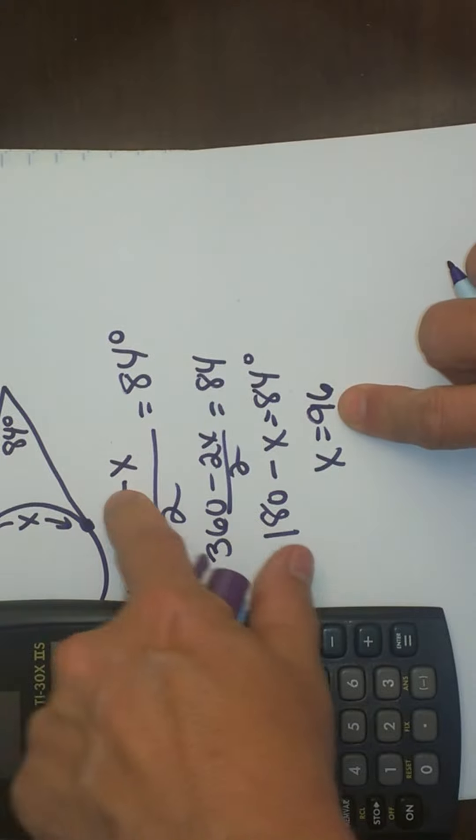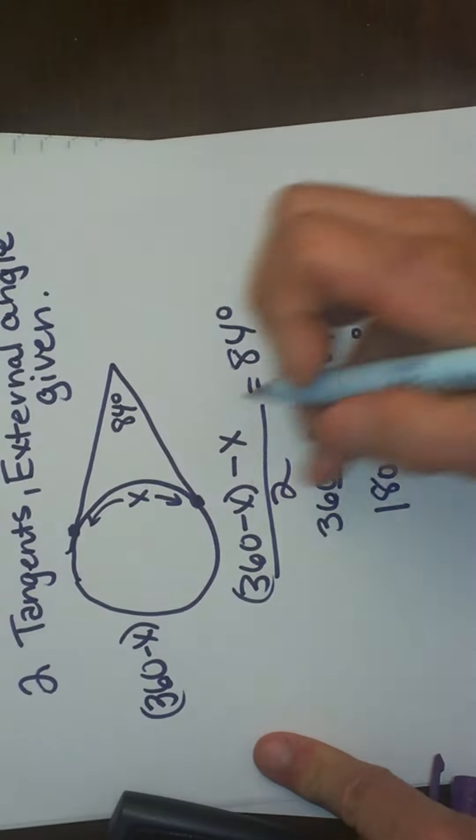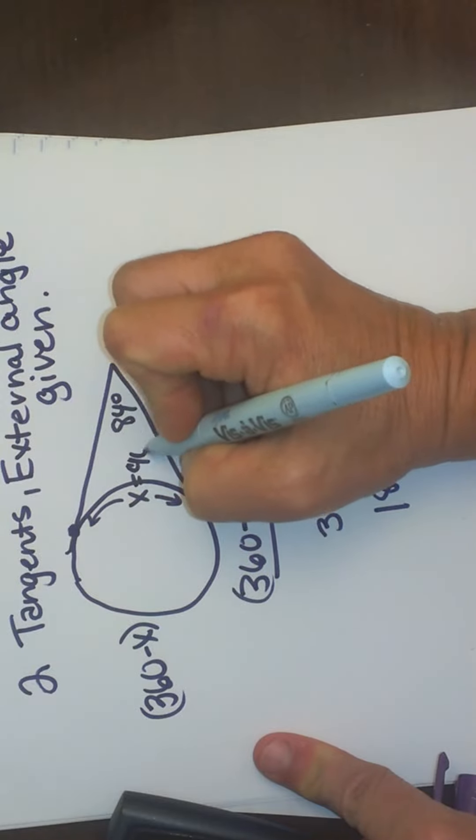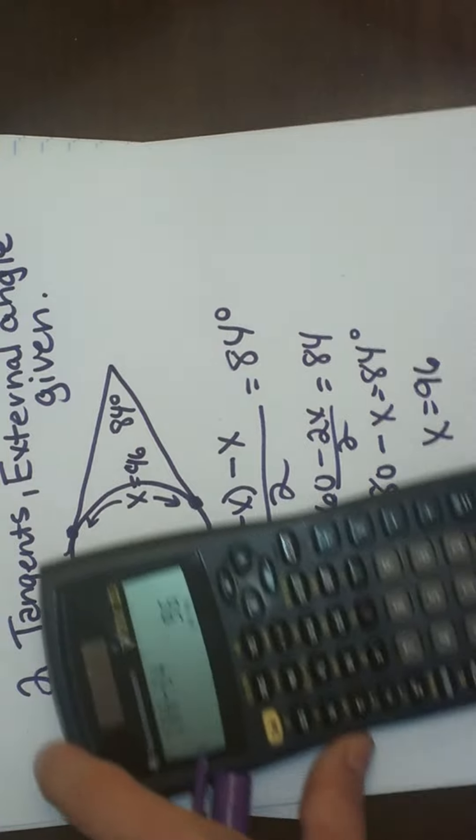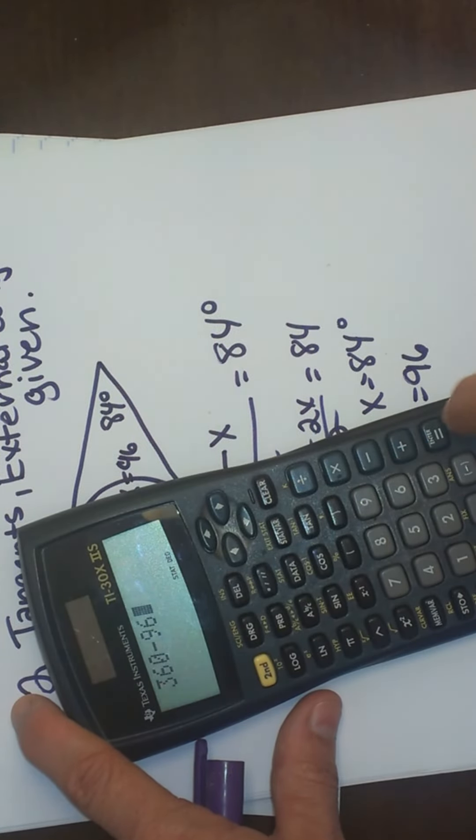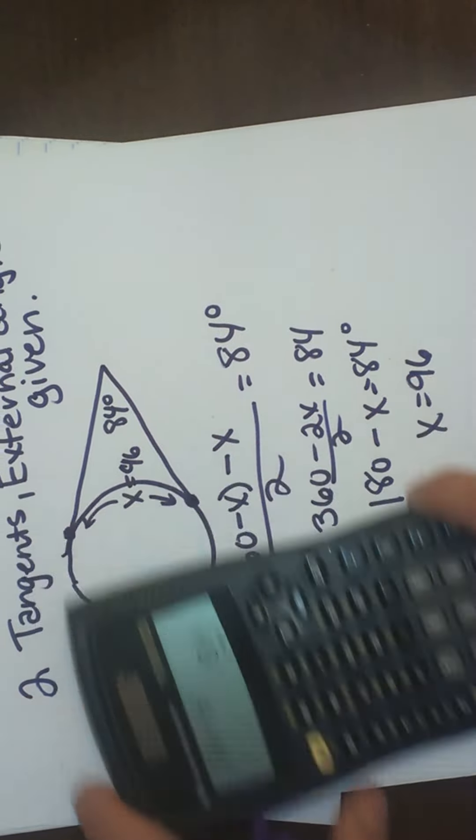So that gives me the smaller arc. Let's go back up here. Label this as 96 and then we know that the large arc is 360 minus 96. So that means that is 264.